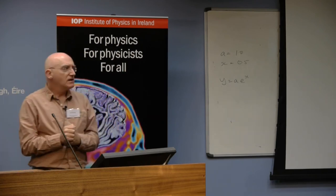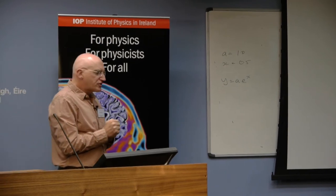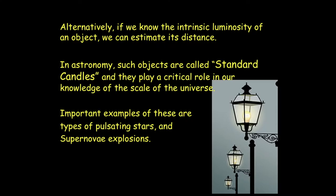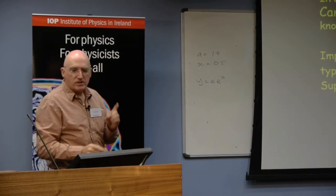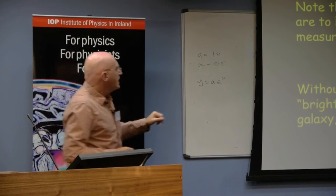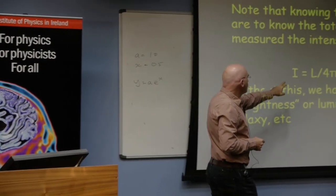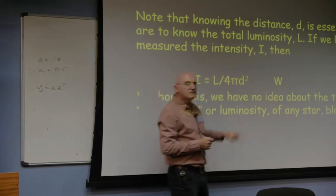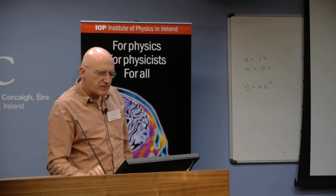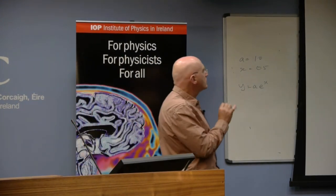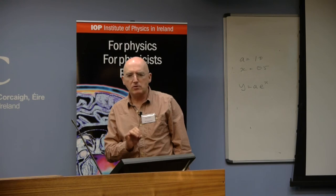Now the other thing that we can do in astronomy is to try to find objects whose luminosity we know already. A type of object, a type of star or something else that we know has an intrinsic luminosity of so many watts. Because if we know that, then we can go back to our expression again and measure the intensity with a telescope. If we know that and that, then we can calculate the distance directly.